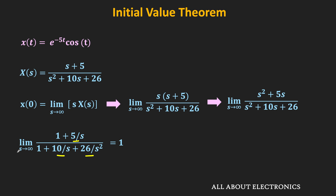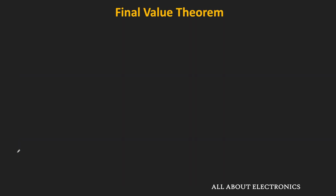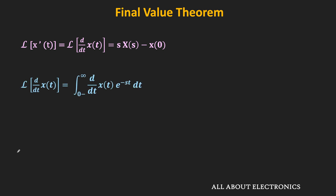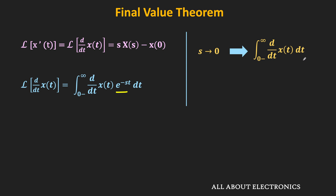Now let us see the proof of the final value theorem. Once again, we take the Laplace transform of dx/dt, which is s·X(s) − x(0). As per the definition of the Laplace transform, this is also equal to the integral from 0⁻ to infinity of (dx/dt)·e^(−st) dt. As s tends to 0, the exponential term becomes 1, and we are left with the integral from 0⁻ to infinity of (dx/dt) dt, which equals x(∞) − x(0).